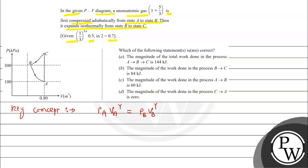We can apply the conditions for work done. Now let's see the solution. The change A to B is an adiabatic change — this state A to B is adiabatic compression.